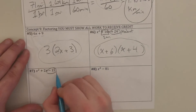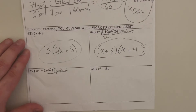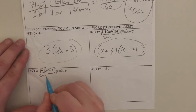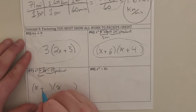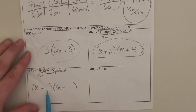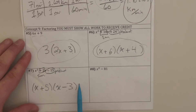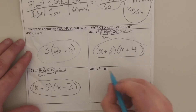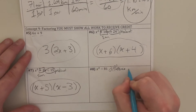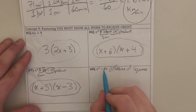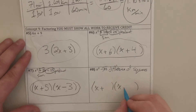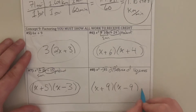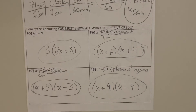Similar setup for number 7: our product is negative 15 and our sum is positive 2. Build your foundation — I have x times another x. Since our product is negative, these two signs are going to be different. Since our sum is positive, the larger number has to go with a positive. Two numbers multiplied together to get 15 could be 5 and 3. Since the sum is positive 2, the positive has to go with 5. For number 8, this is a difference of squares — it has to be the same value. I'm taking the square root of 81, my product is negative so the signs are different. Square root of 81 is 9. The middle term has to be 0 because when you add those two together, they cancel out.